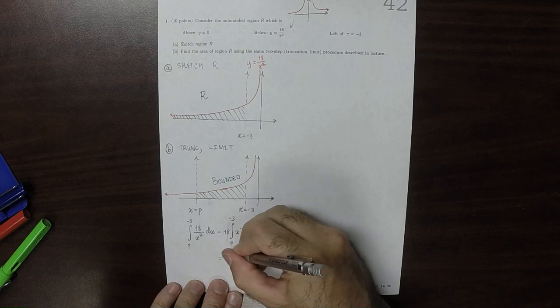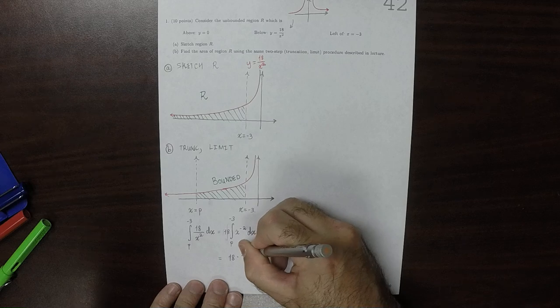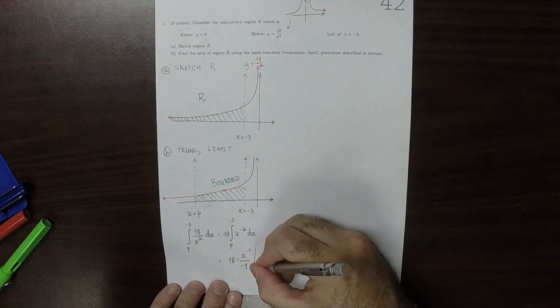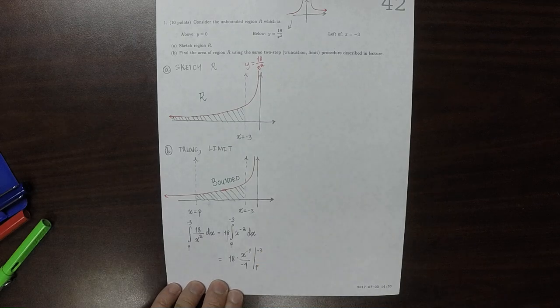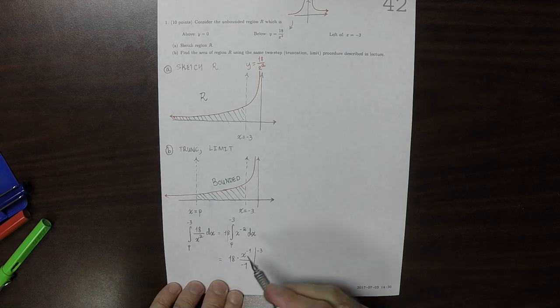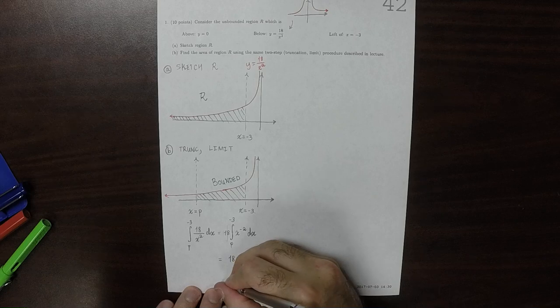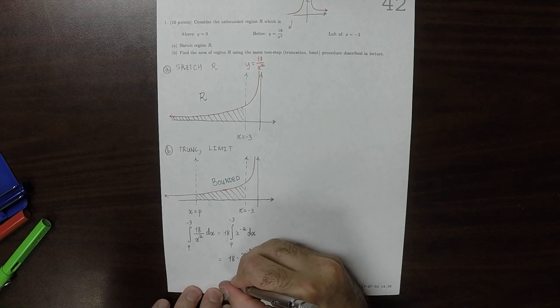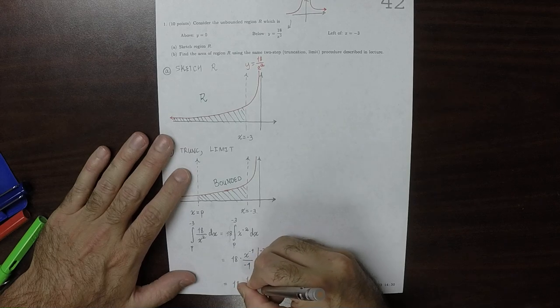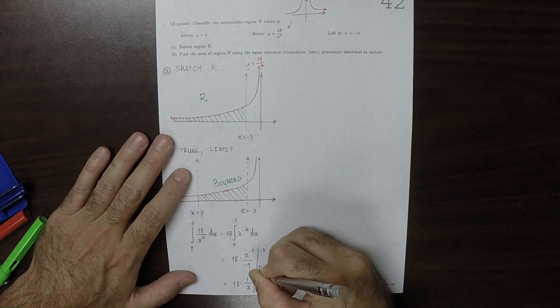We can use the fundamental theorem. That would be 18 times x to negative 1, divide by negative 1 from P to negative 3. Then I'll spend this negative 1 to reverse the order of evaluation. And obtain that it is 18 times 1 over x. And then evaluate it from negative 3 to P.